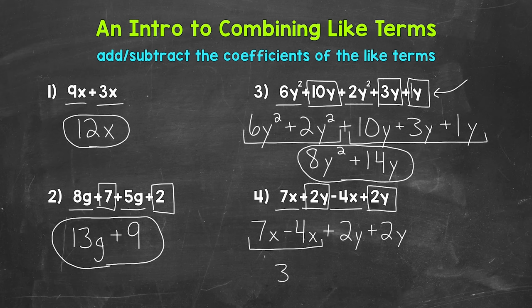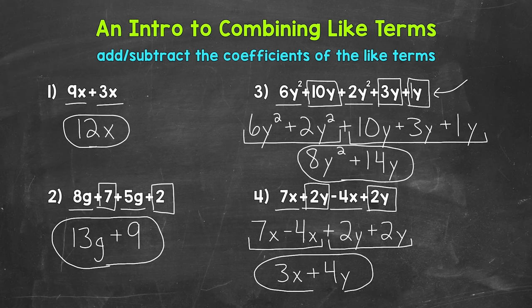Now we can combine like terms. So we have 7x minus 4x — or you can think of this as 7x being combined with negative 4x. 7 minus 4 is 3, and then we have the x. Then we have 2y plus 2y — that gives us plus 4y. So we end up with 3x plus 4y, and that's our simplified expression. We went from 4 total terms to 2 total terms by combining like terms. 3x plus 4y is equivalent to the original expression.